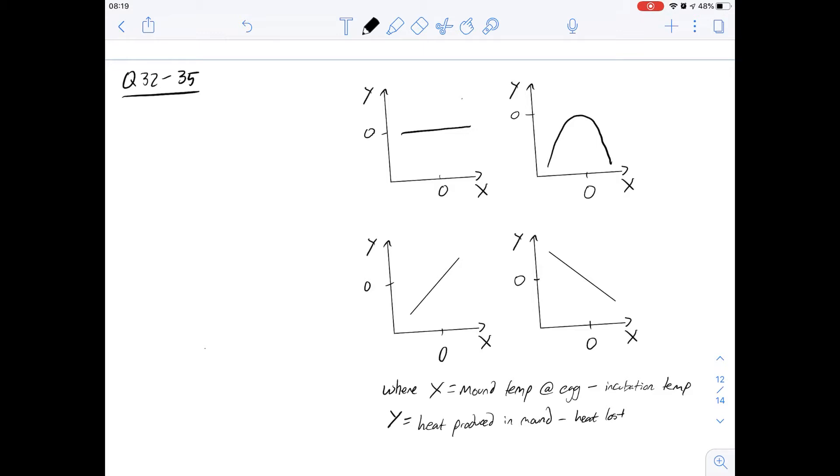So that is going to be the Mallee fowl instead of the bush turkey, because the line is a little flatter in that case. So the average oxygen consumption over that period is going to be higher than you'd see for the bush turkey. The answer for this one is A. It occurs in the Mallee fowl between day 50 and day 60.